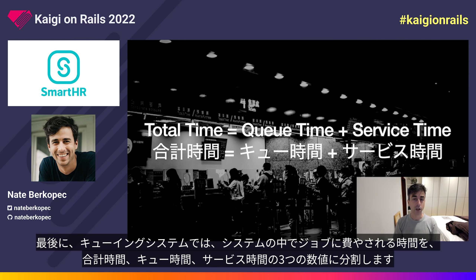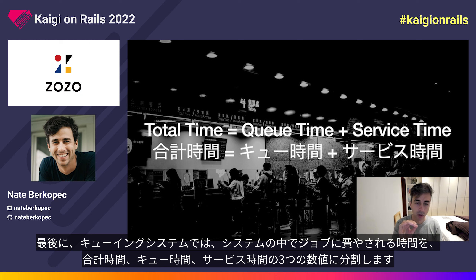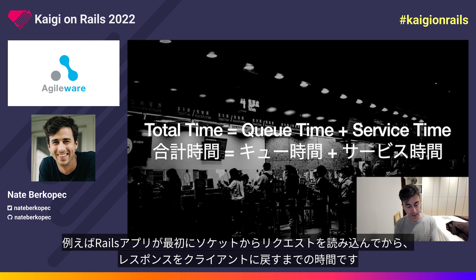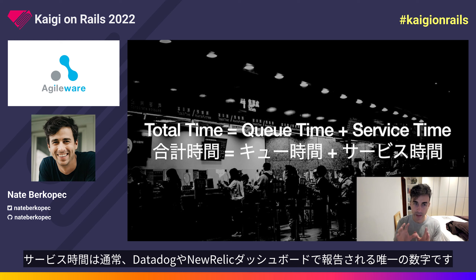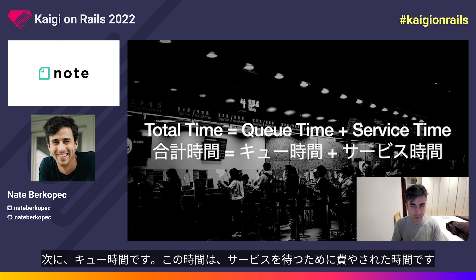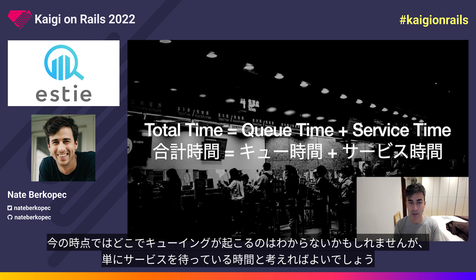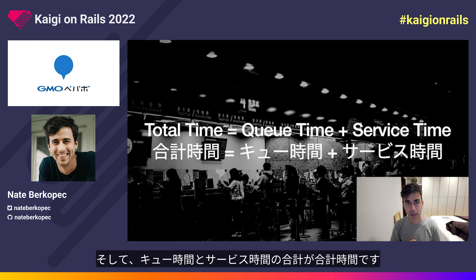In a queuing system, we divide the time work spends inside the system into three different numbers: total time, queue time, and service time. The service time is the time actually spent doing the work. In a Rails application, this is the time between when the Rails app first reads the request off the socket and then sends it back to the client. That service time is usually the only number reported on your dashboards — Datadog, New Relic, whatever you use. Queue time is just the time spent waiting for service. Queue time plus service time equals total time.